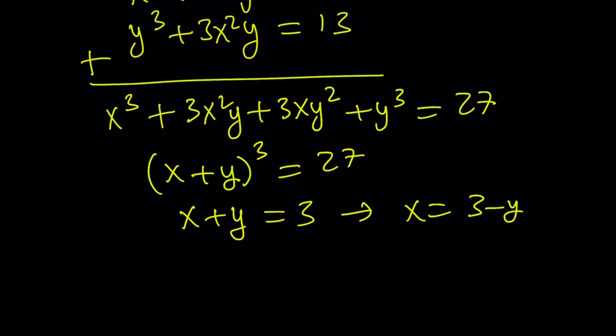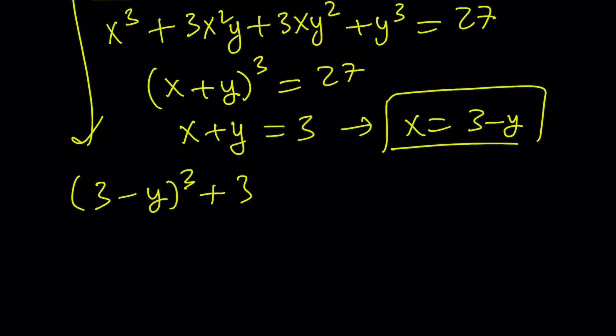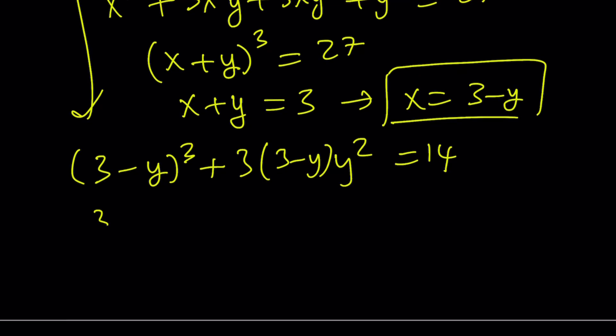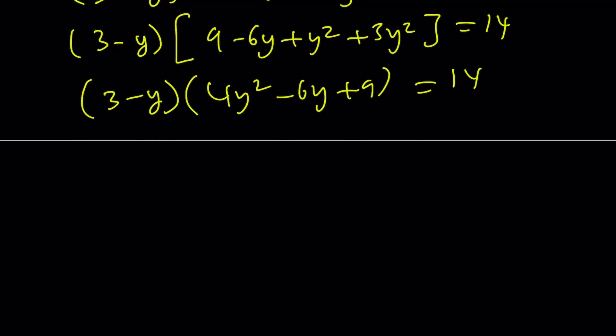Let's go ahead and do the first one. Let's replace x with 3 minus y. So we get 3 minus y cubed from the first equation. And 3 minus y cubed plus 3 times 3 minus y multiplied by y squared equals 14. And guess what? This is going to give us a cubic, right? So if you do this, we're going to have to cube this, or we can actually pull out a 3 minus y. And then 3 minus y squared, we can do that as, I just didn't want to cube that. 9 minus 6y plus y squared, and then plus 3y squared is equal to 14. And then this is going to give us y squared, 4y squared minus 6y plus 9 is equal to 14. And here we can go ahead and distribute 12y squared minus 18y plus 27 minus 4y cubed plus 6y squared minus 9y equals 14.